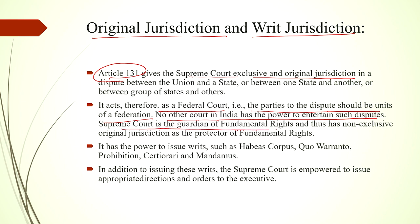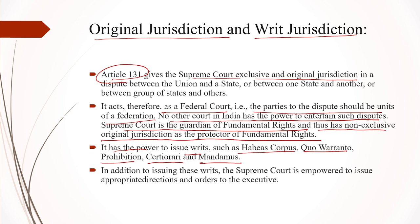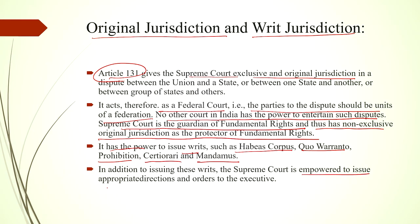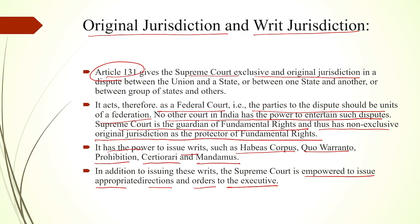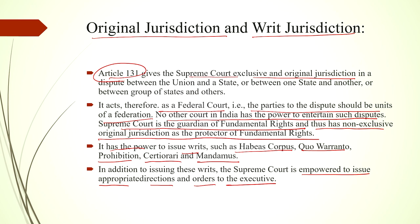The Supreme Court is the guardian of fundamental rights and has non-exclusive original jurisdiction as the protector of fundamental rights. The Supreme Court has the power to issue writs such as habeas corpus, quo warranto, prohibition, certiorari, and mandamus — these five kinds of writs which the Supreme Court has the power to issue when it finds that a fundamental right has been compromised. In addition to issuing these writs, the Supreme Court is also empowered to issue appropriate directions and orders to the executive to execute its writs.